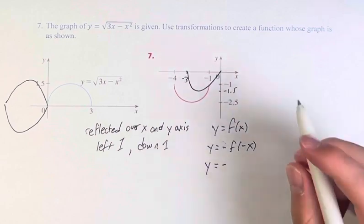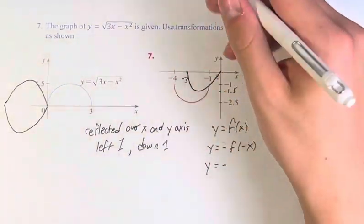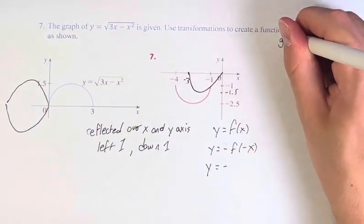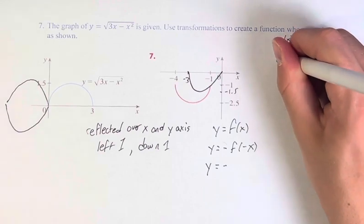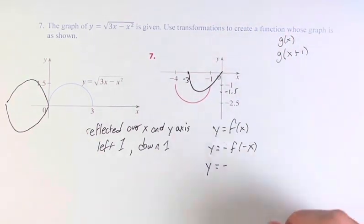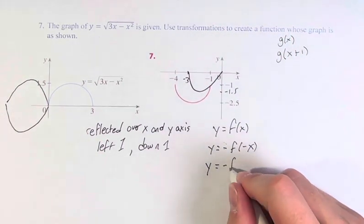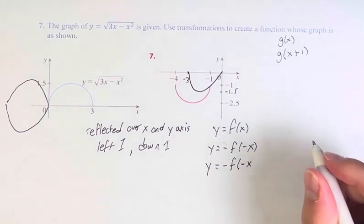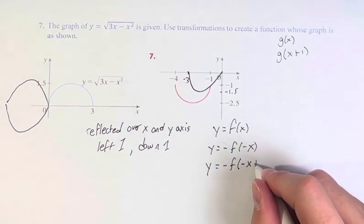Then we're going to the left 1, so we have to be careful here. Going to the left 1, let's say we have a function g of x. To the left 1 is g of x plus 1. Here, it's negative x plus 1.